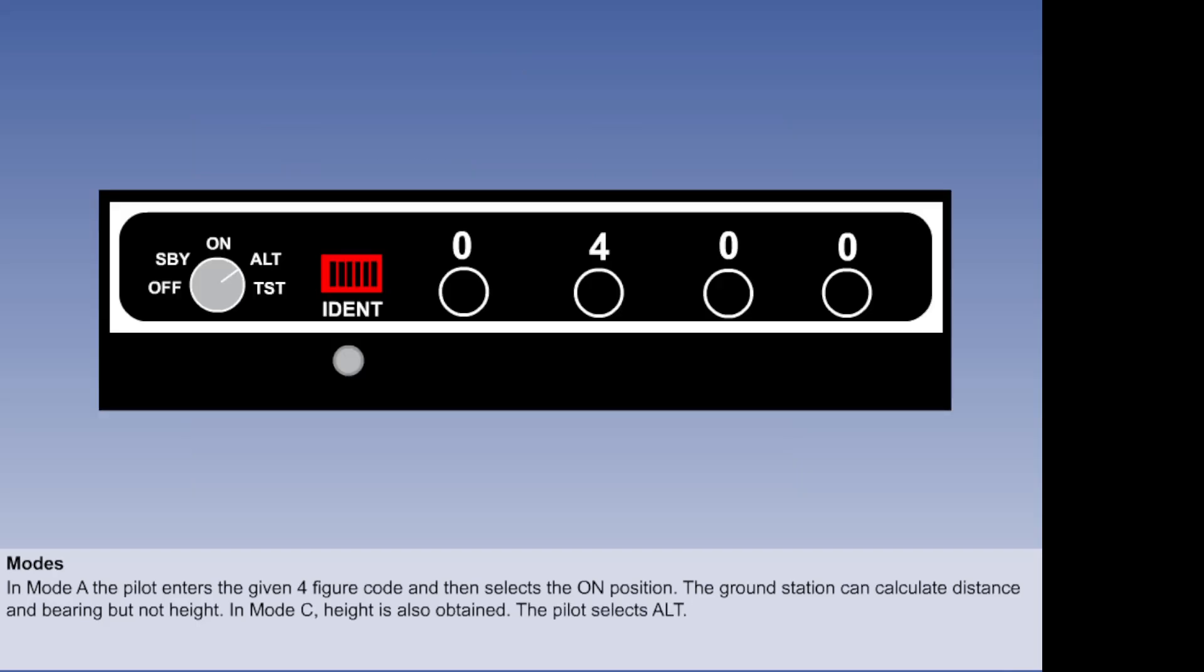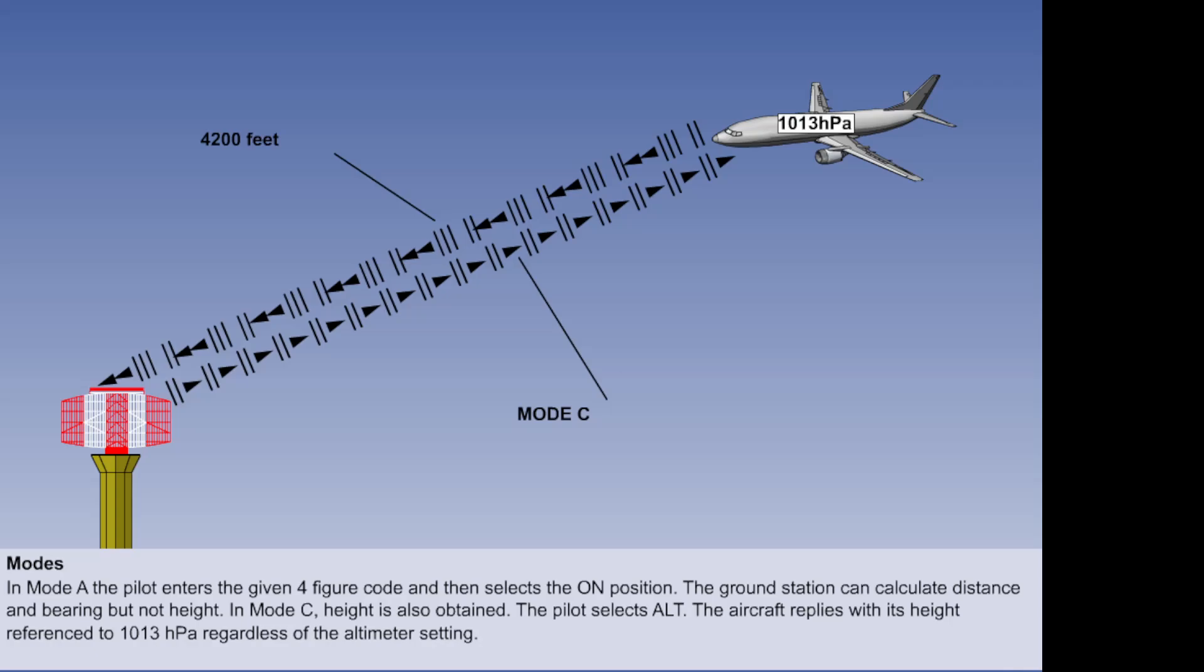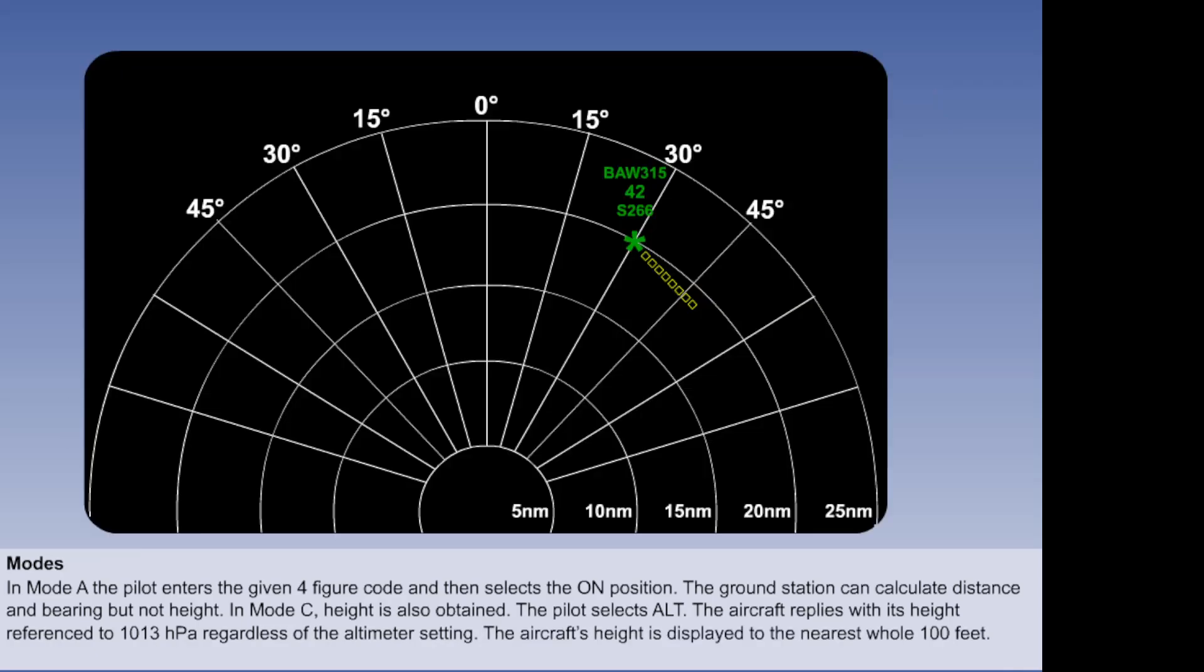To operate in mode Charlie, the transponder must be set to ALT on the transponder function selector. The aircraft replies with two framing pulses and up to 12 pulses in between. The reply is in an ICAO-determined code that corresponds to its height, referenced to 1013 hectopascals, regardless of the pressure setting on the altimeter and the code selected on the transponder. The mode Charlie code is determined by an encoder, which is mechanically actuated by the altimeter's aneroid capsule and is thus independent of the altimeter's pressure setting. It is accurate to within 50 feet.